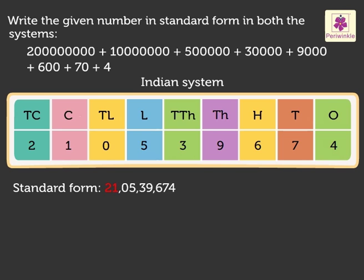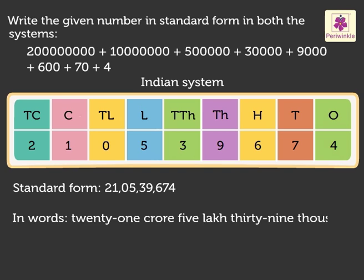That is, 21 crore 5,39,674. Remember, we insert the commas between two periods. It is written in words as 21 crore 5 lakh 39 thousand 674.